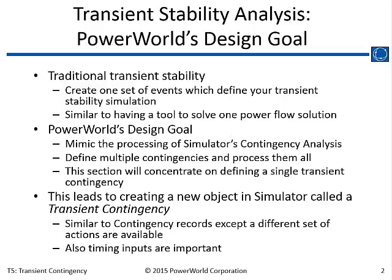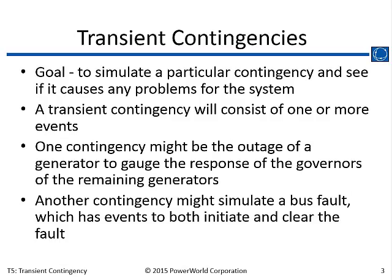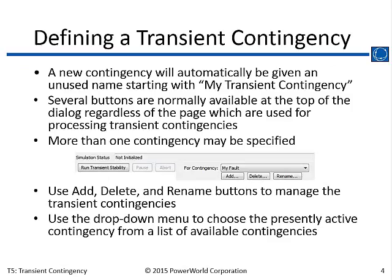With transient contingencies, the main difference is the timing inputs — specifically, when you want events to occur throughout your simulation. You can define as many events as part of one contingency as you want. Typically you might have two or three: apply a fault, clear a fault. We have a number of actions you can define with transient contingencies.